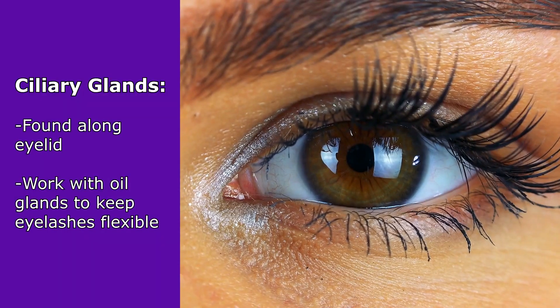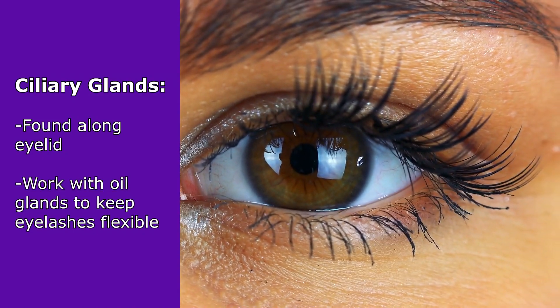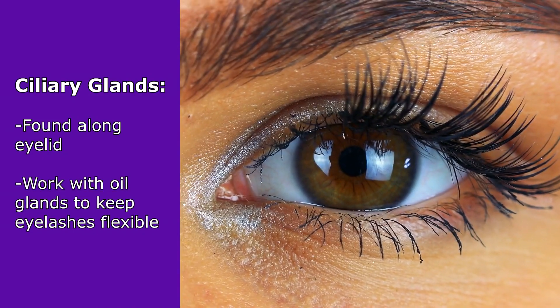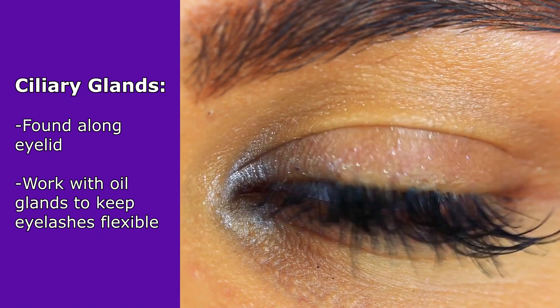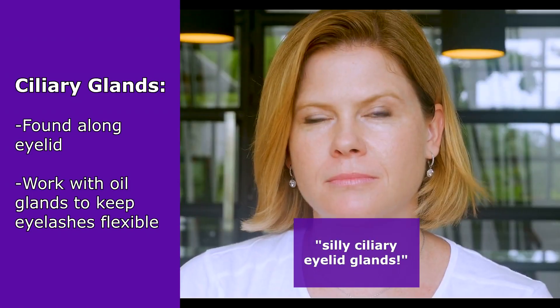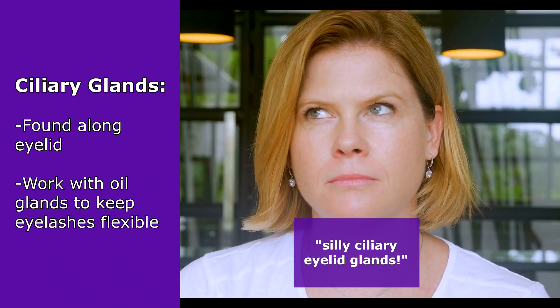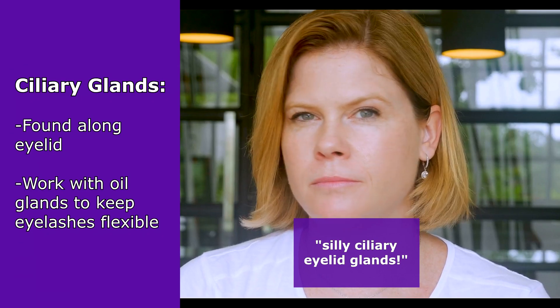Ciliary glands are found along the eyelid and work with oil-secreting sebaceous glands to keep eyelashes flexible. When something is silly, you roll your eyes — so that can help you remember where the ciliary glands are located.